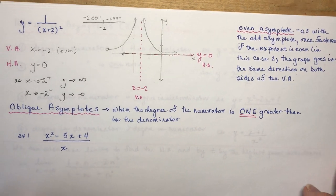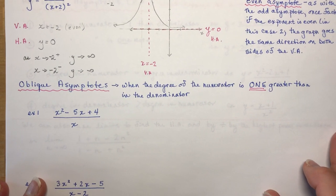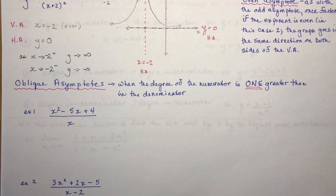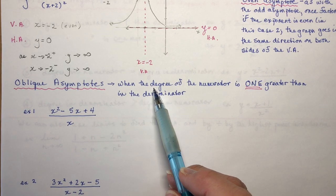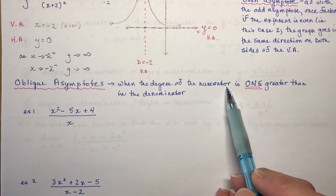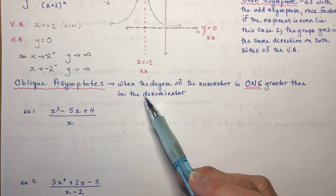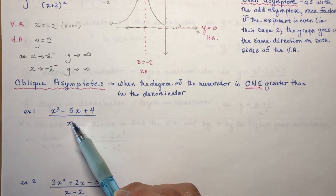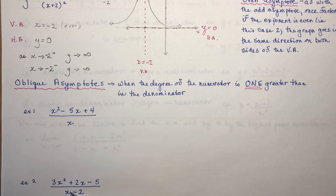Now let's turn to oblique asymptotes, because they cause a little more trouble. An oblique asymptote occurs when the degree of the numerator is exactly 1 greater than the degree of the denominator. In the examples shown, the numerator is degree 2 and denominator is degree 1 — both will have oblique asymptotes.